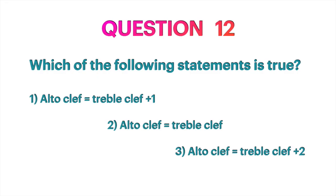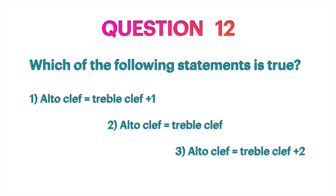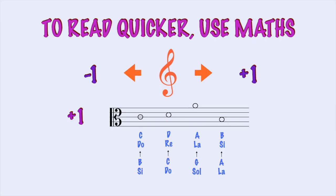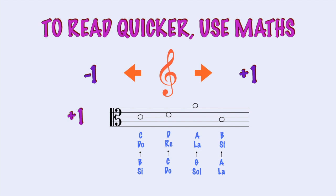Question 12: Which of the following statements is true? Alto clef equals treble clef plus one. Let's have a look at the maths: Si becomes Do, Do equals Re, Sol equals La, La equals Si — one above.